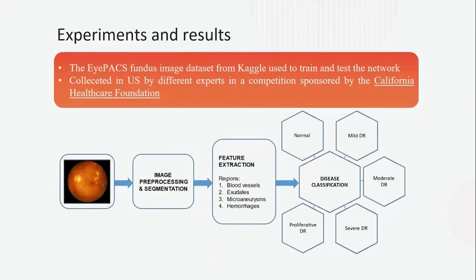The APTOS fundus image dataset from Kaggle was used to train and test the network. The dataset was collected in the US by different experts, with a competition sponsored by the California Healthcare Foundation. The key extracted features of Diabetic Retinopathy include blood vessels, exudates, microaneurysms, and hemorrhages. The five classes of Diabetic Retinopathy depend on the presence and number of these four features.